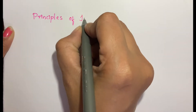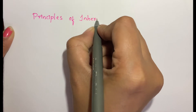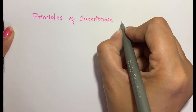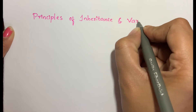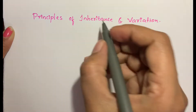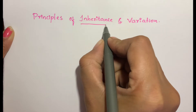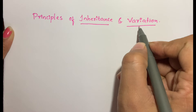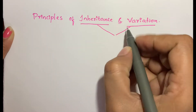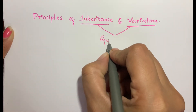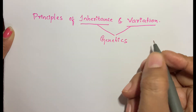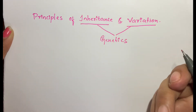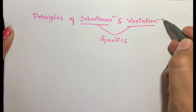So here is the first topic: Principles of Inheritance and Variation. The branch of biology which deals with these two concepts — inheritance and variation — is called genetics.